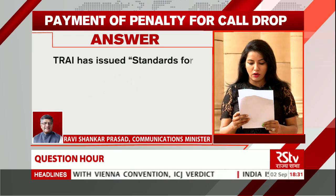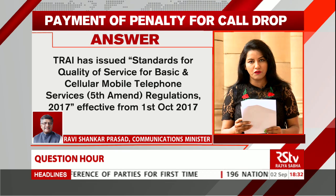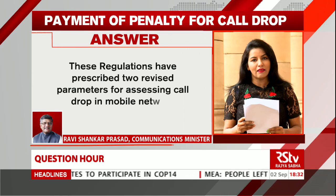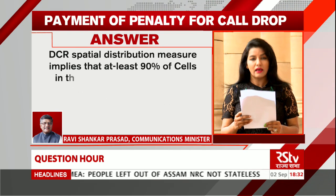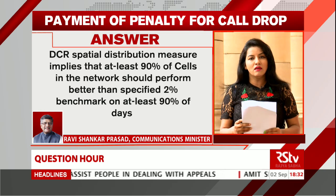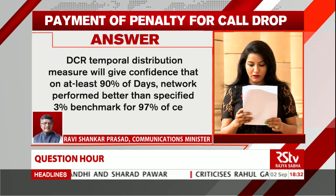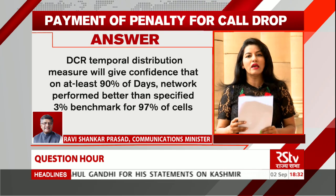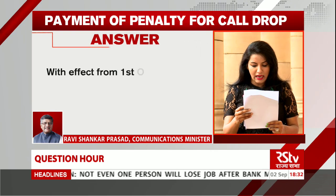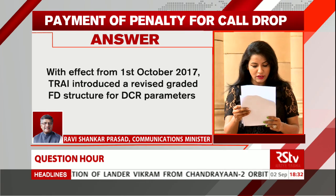TRAI has issued the Standards for Quality of Service for Basic Wireline and Cellular Mobile Telephone Services, 5th Amendment Regulation 2017, effective from 1st October 2017. These regulations prescribe two revised parameters for assessing call drop: Drop Call Rate spatial distribution measure — at least 90% of cells should perform better than the specified 2% benchmark on at least 90% of days — and DCR temporal distribution measure, ensuring at least 90% of days the network performed better than the specified 3% benchmark for at least 97% of cells. TRAI has also introduced a revised graded financial disincentive structure for DCR parameters.